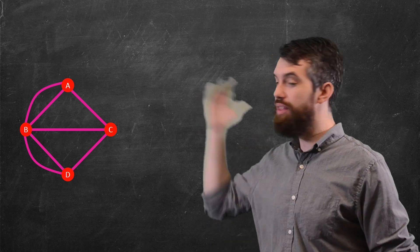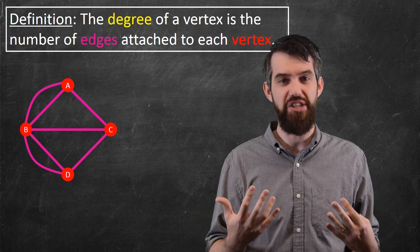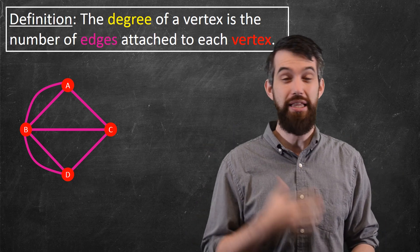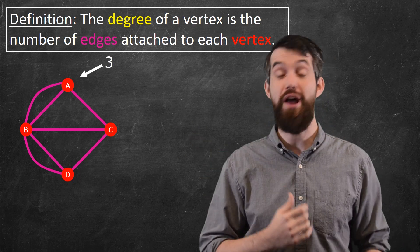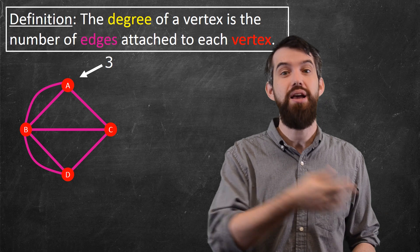That is, we will say that the degree of a particular vertex, like A, is the number of edges that are emanating from that particular vertex. So in this particular case, for the A, I've got three different edges going out, one to B, another to B, and one over to C.